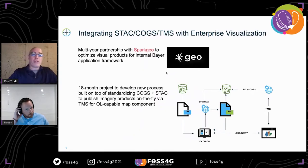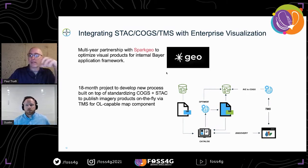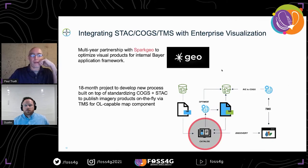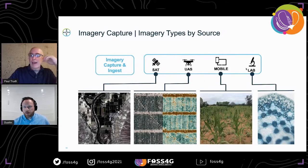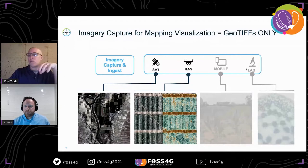We've been on a multiyear partnership with Spark Geo to optimize our visual products for the internal Bayer application framework, what we call Velocity. This last project with Spark Geo has been an 18-month project where we've been standardizing on the STAC specification with COGs. The ImagineAPI or Imagine Platform — for the purposes of this presentation, ImagineAPI is synonymous with imagery platform or the image catalog. While we capture many types of imagery, the content for what we're describing today is for GeoTIFFs only, which comes only from our satellite and UAS pipelines.